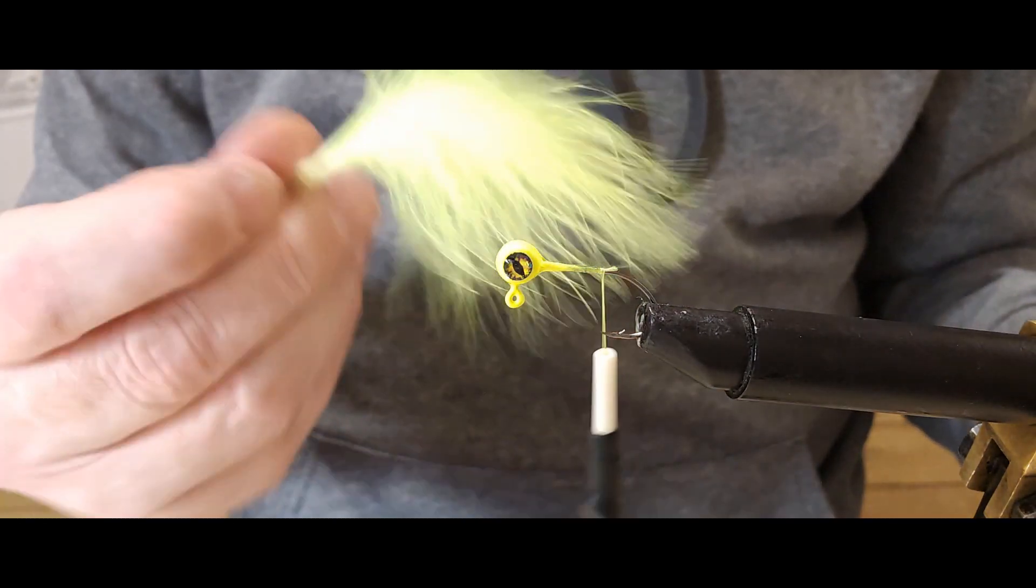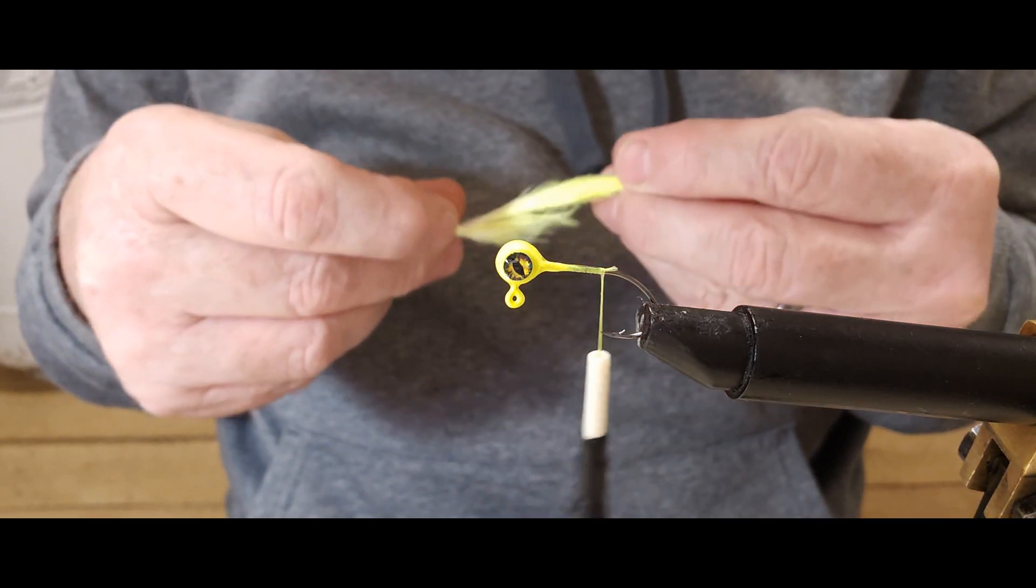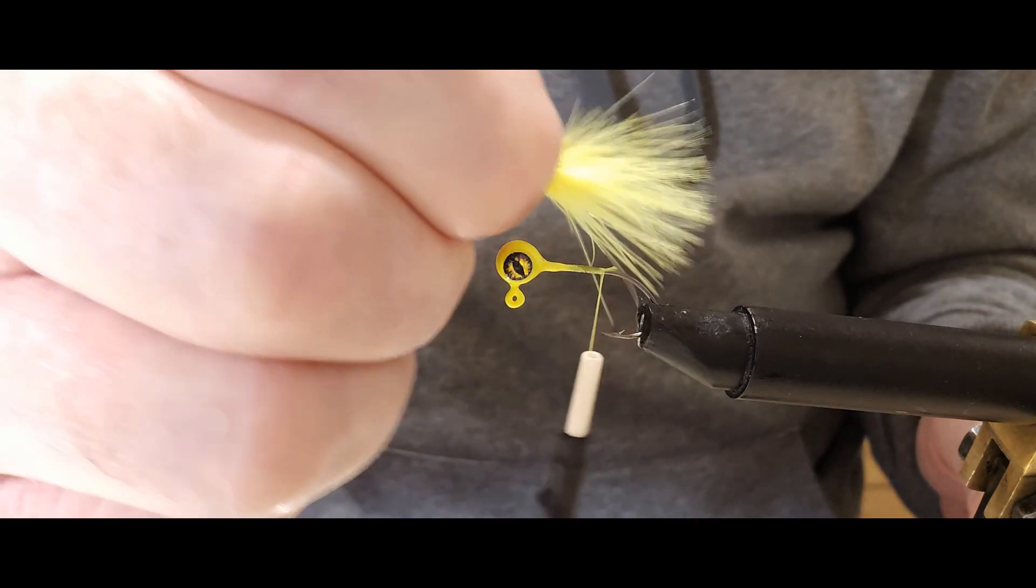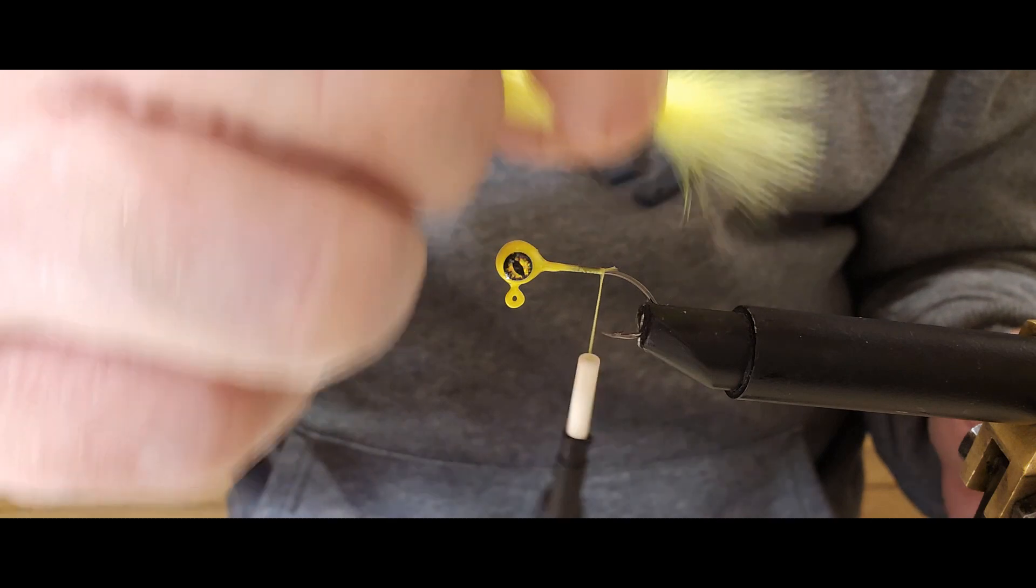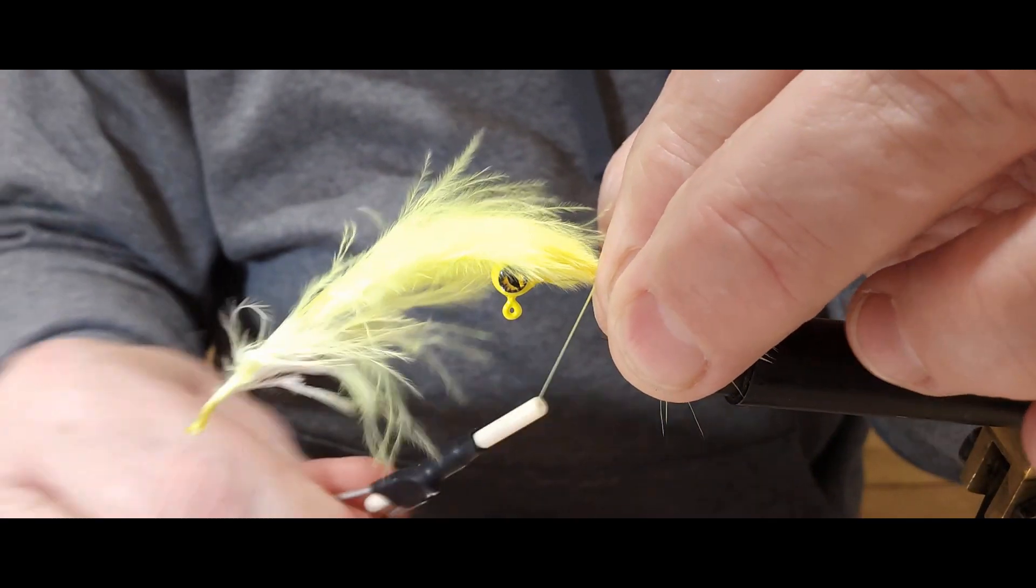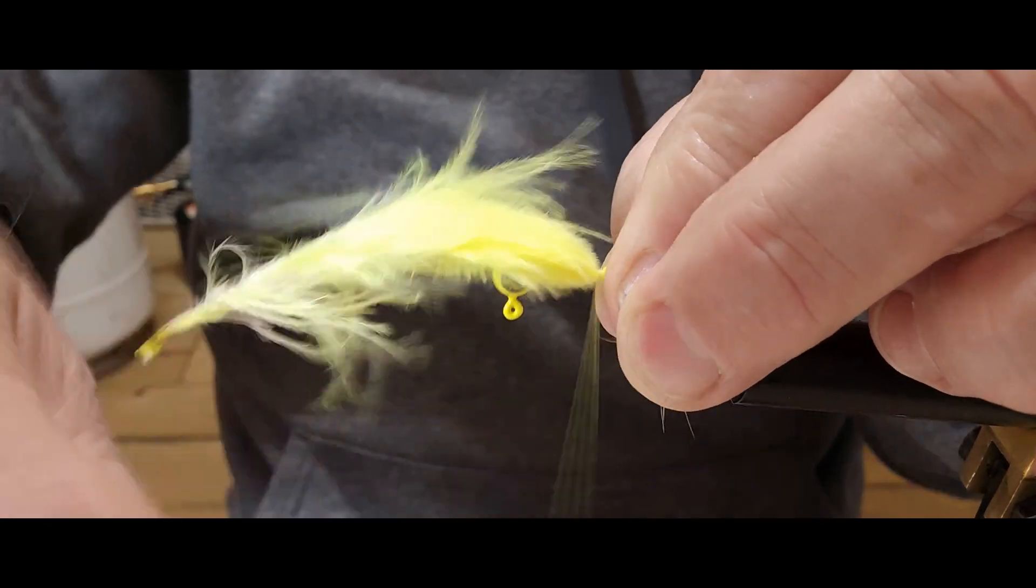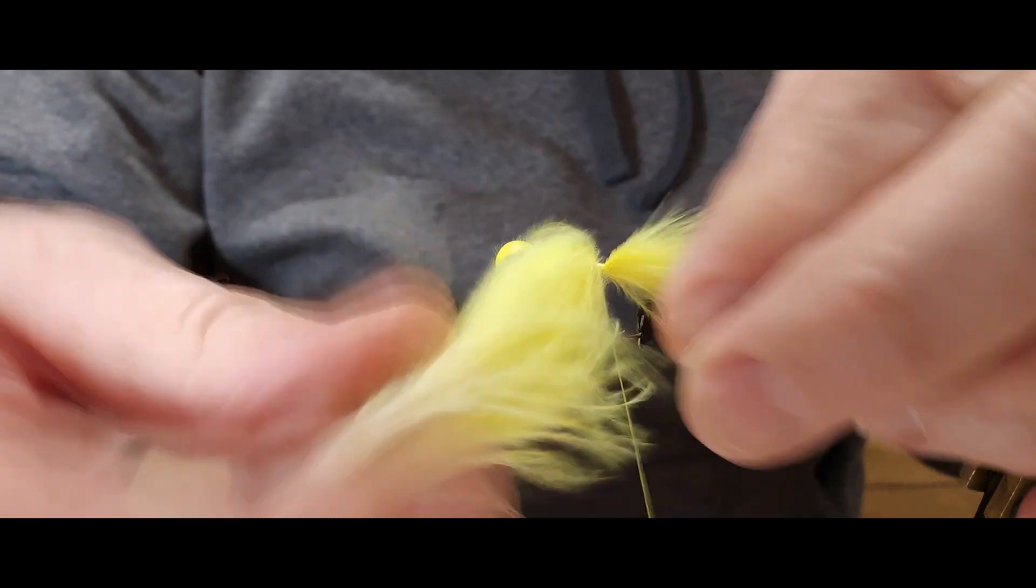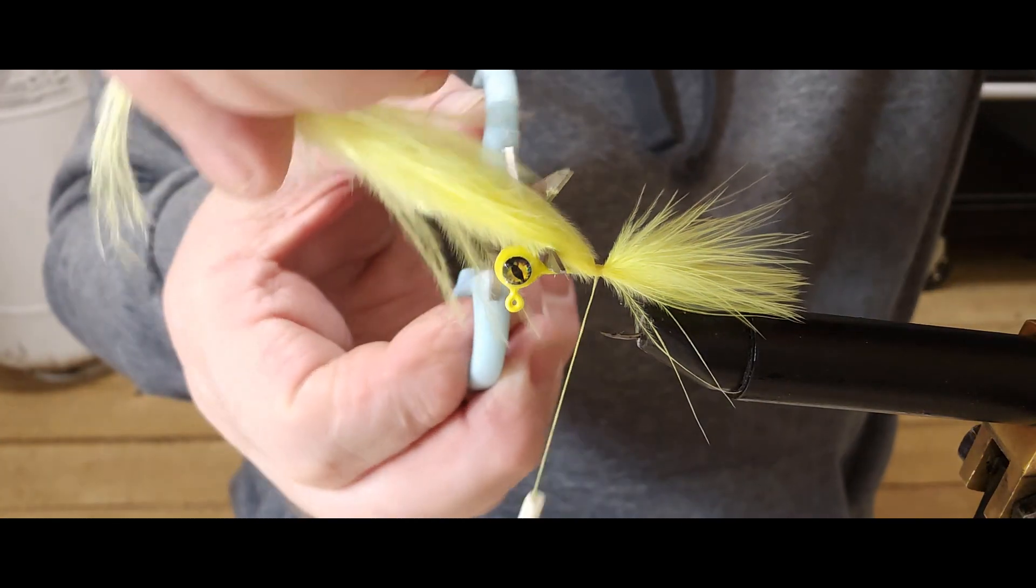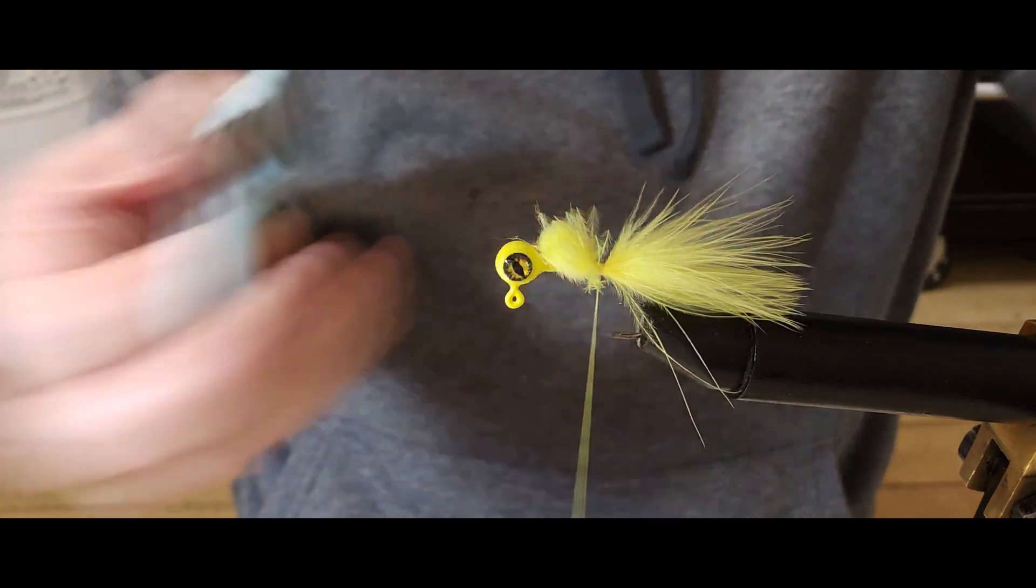And I have got some White River. This is fluorescent Yala marabou we're going to be using on this one. And I want it hanging over about like that I believe. So I'm just going to go ahead and give it four or five good tight wraps to get it locked in. I'm going to get right behind the head and go ahead and cut off that excess marabou.